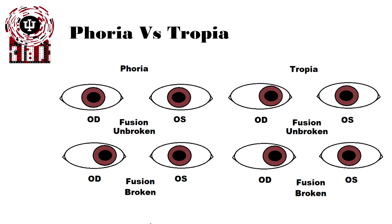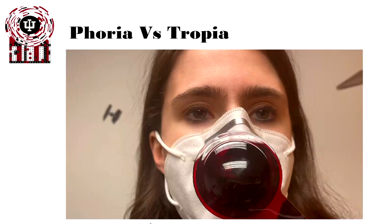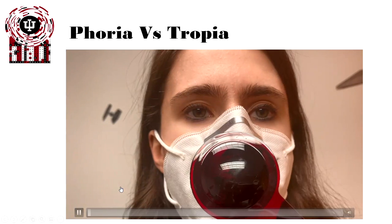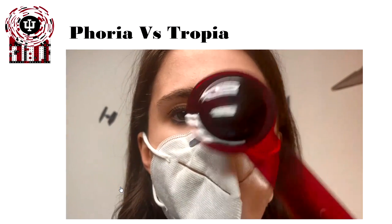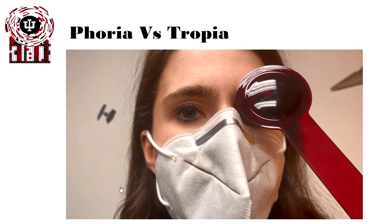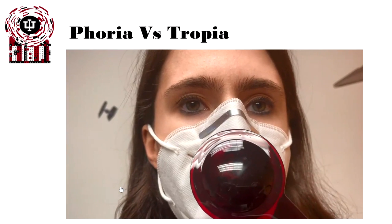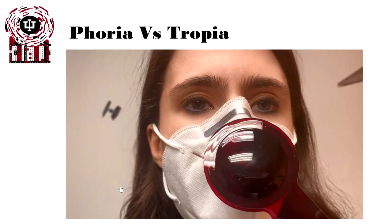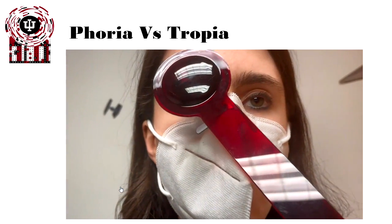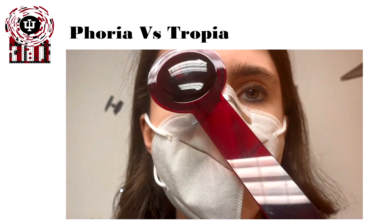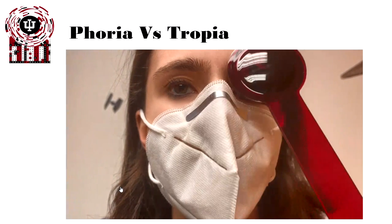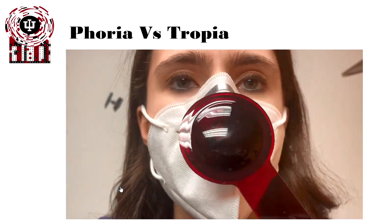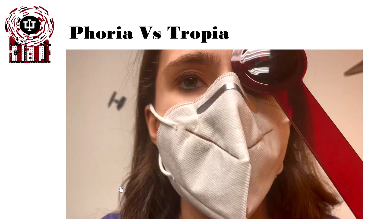Conversely, looking at tropias, it doesn't matter if the fusion is broken or not — the eye is turned in at all times. Let's look at somebody with a tropia. When we cover her left eye, the eye has to fixate out, so it moves out. We determine this through the cover-uncover test, which determines tropia versus phoria. If we now cover her right eye, though, her right eye doesn't move — it's always fixating. The left eye is the dominant eye and always fixating. So whenever you cover the right eye, it doesn't need to move. This is a tropia, not a phoria.